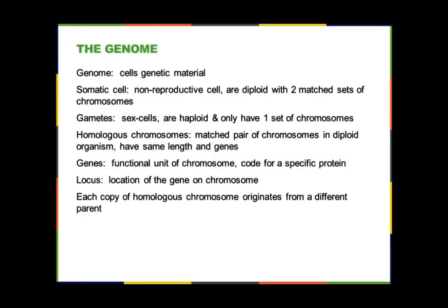Inside your cell you've got your genome, which is the cell's genetic material. Our cells fall into two categories regarding cell division. Your somatic cells are your non-reproductive cells — in humans these are everything except the sperm and egg. They're diploid, meaning they have two matched sets of chromosomes. Your gametes are the sex cells — sperm and egg — and they're haploid, having only one set of chromosomes. It's important they only have one set because they will combine with another gamete to form a diploid cell, so that only half the genetic information comes from each parent.